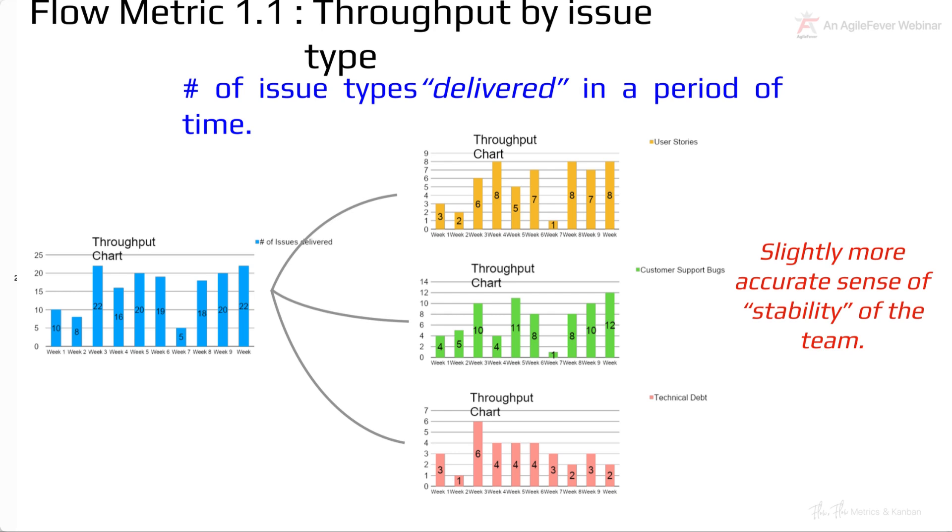Now, this is much better because now you have a fairly good sense of the stability of the team. Why? Because now you know this team is capable of delivering around seven to eight stories per week. This team is capable of delivering approximately ten customer support bugs per week and about three to four technical debt stories per week. And that is a very good starting point to understand flow metrics.